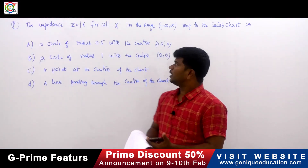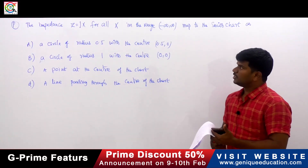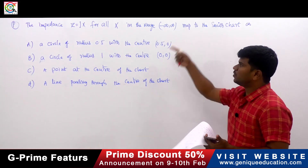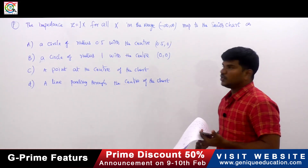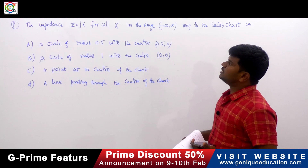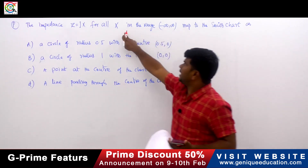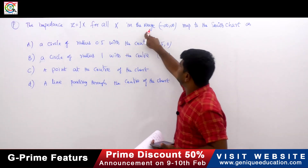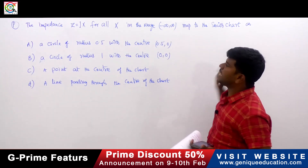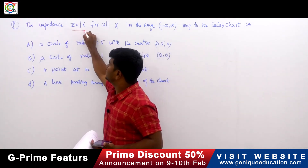This is the next question on the EMT, and it is also on the Smith chart. The question is: the impedance Z equals jX for all X in the range minus infinity to infinity — map to the Smith chart as...